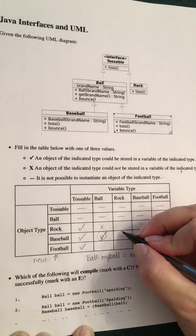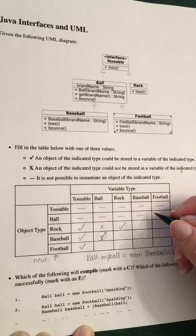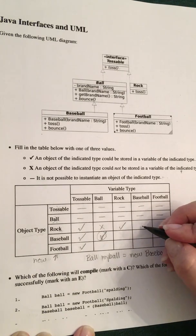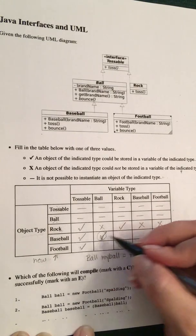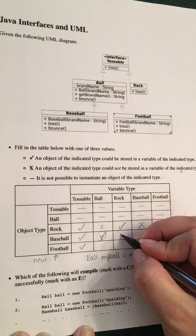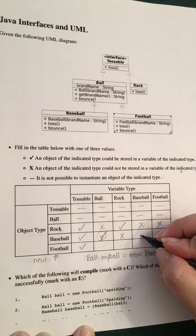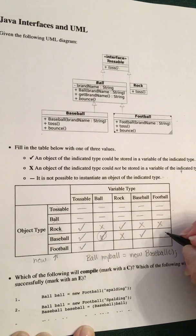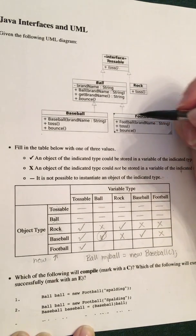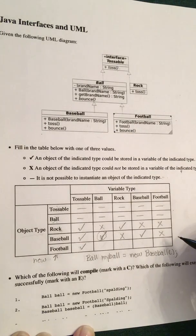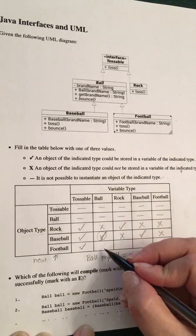Can I say 'new Rock' and put it in a Rock variable? Yes, that's what we'd expect — that's the normal thing. Can I say 'new Rock' and put it in a Baseball variable? No. And I can't put it in a Football variable either. Can I say 'new Baseball' and put it in a Rock variable? No. Can I say 'new Baseball' and put it in a Baseball variable? Yes, that's what we expect. Can I say 'new Baseball' and put it in a Football variable? No — they both extend Ball, but they don't have a relationship with each other. A football is not a baseball.